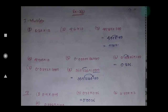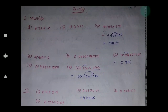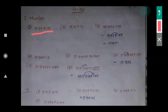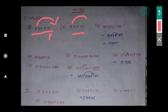So exercise 3B — multiply. This question, all are easy only. 8.37 by 10. How many zeros? 1 zero. That means it will shift 1 place to the right side. Here also 1 zero, that means shift 1 place to the right. Like this we have to do. So now see question number 3.